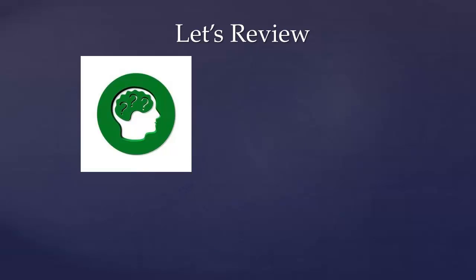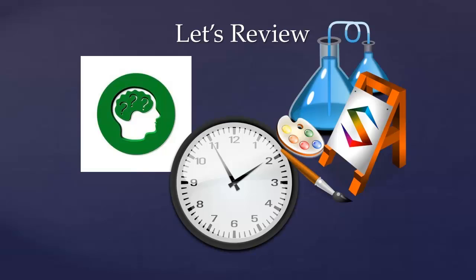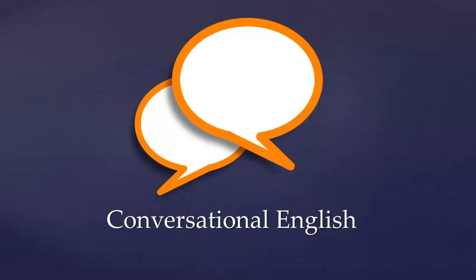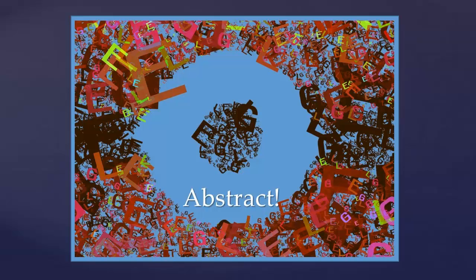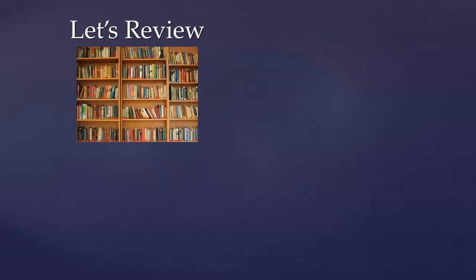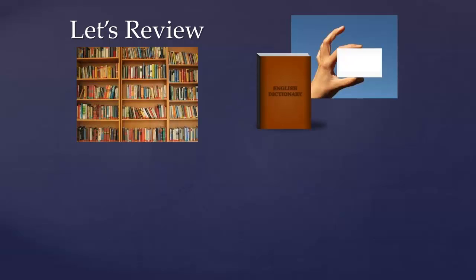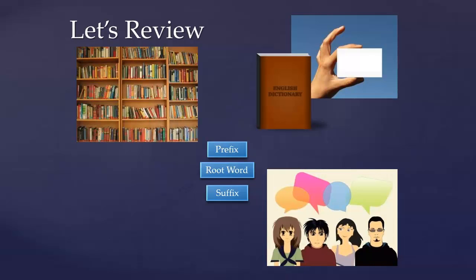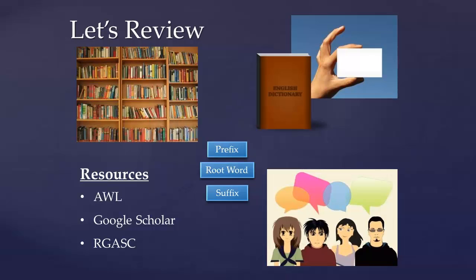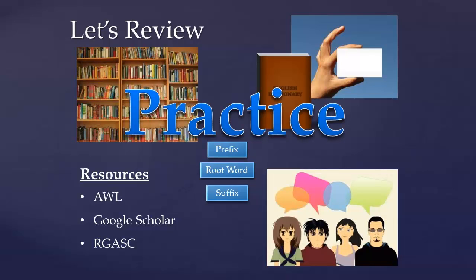Expanding your academic vocabulary isn't easy — it takes time, and it's discipline-specific. We struggle with it because it's different from the conversational vocabulary we use every day, and it often makes us think of things in a more abstract way, which is difficult. This becomes even more problematic for English language learners. Academic vocabulary can be improved by reading more, keeping a word journal or using flashcards and reviewing them, learning the morphology of words including prefixes and suffixes, participating in group discussions preferably with a mix of cultures, and using resources like the AWL, Google Scholar, or the Robert Gillespie Academic Skills Center. And by practicing — practice makes perfect.